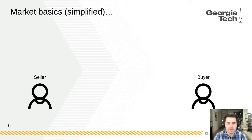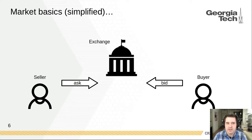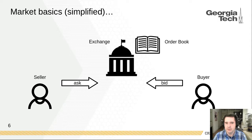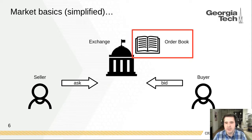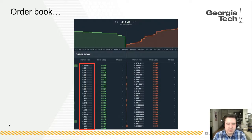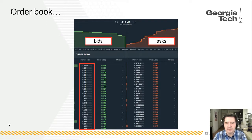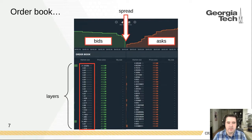Starting with some basic market mechanics: we have a buyer and a seller who want to buy and sell shares and they use an exchange to do so. The way the exchange keeps track of orders is using something called an order book. We have the bids and the asks to buy and sell the stock, we have the spread which is the gap between the best bid and the best ask, and then we have layers, each showing how many shares are available at each price for the stock.